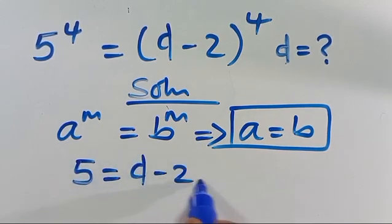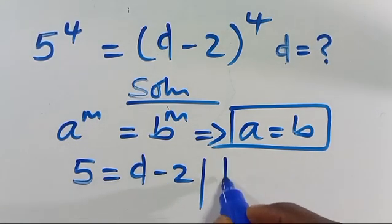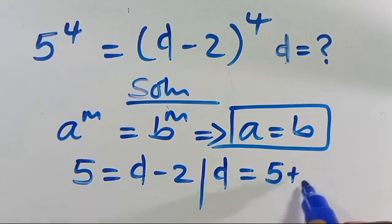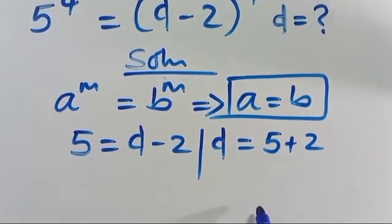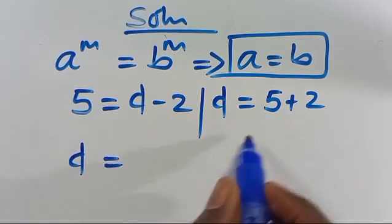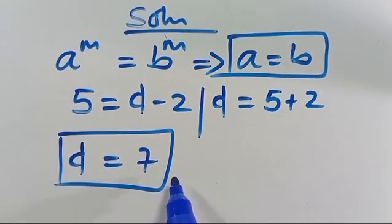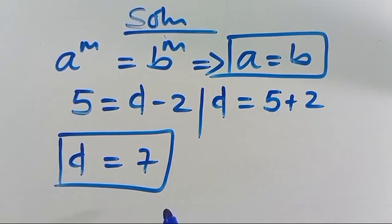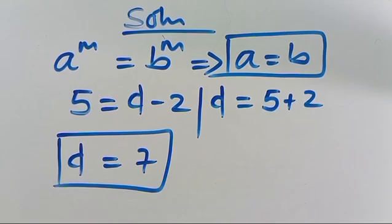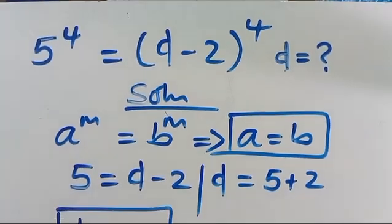Likewise, from here they have the same power — 4 and 4 — so here we have 5 equals D minus 2. From here we can see D equals 5 plus 2, which gives us 7. So D equals 7 is the first solution, but I must tell you that D equals 7 is not the only solution.